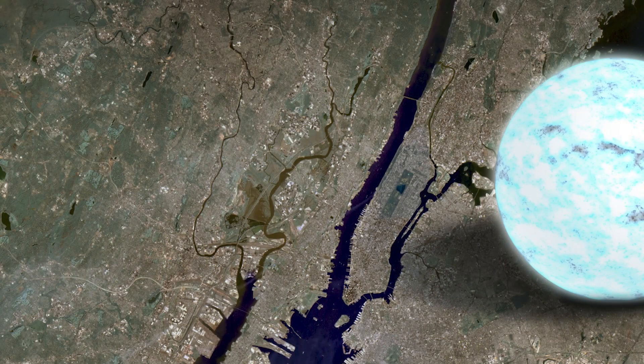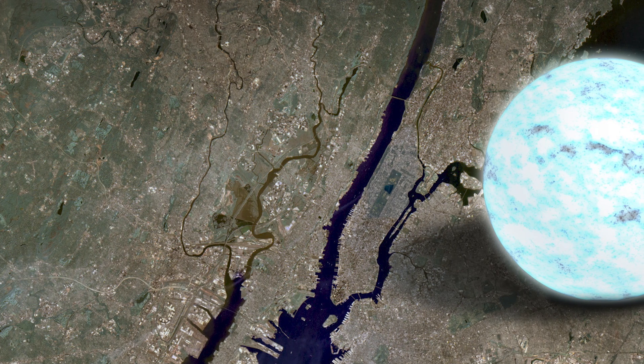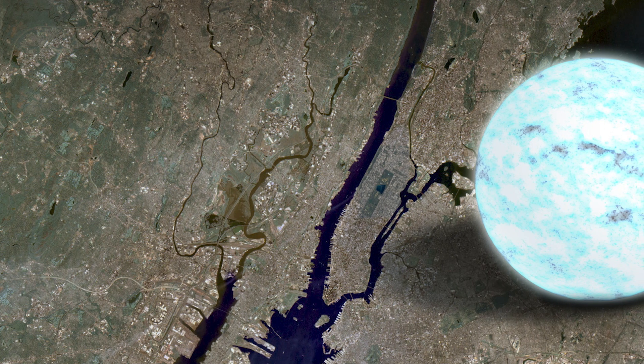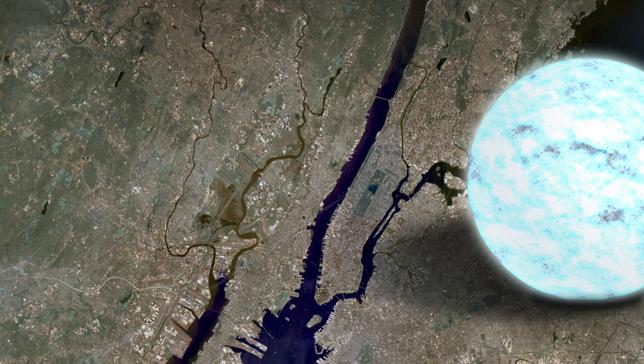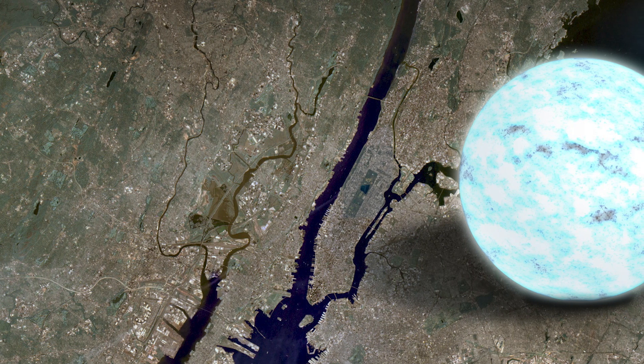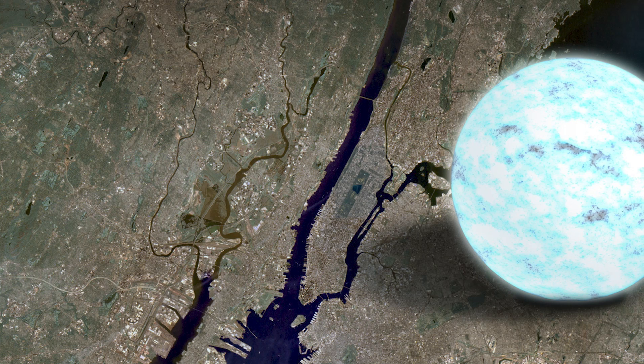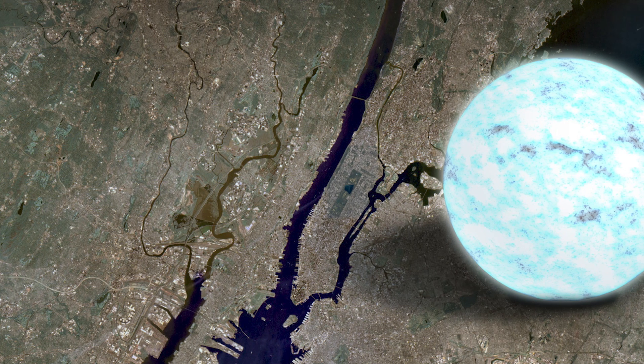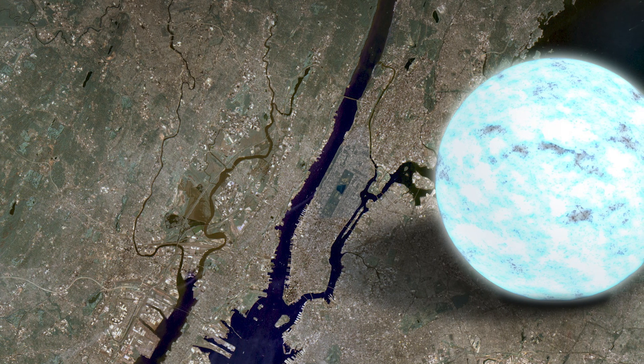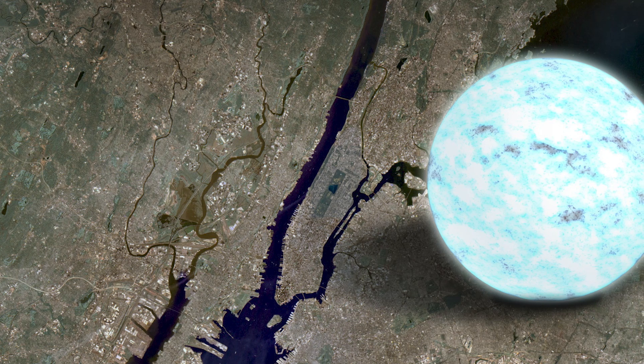To set the scene, if a magnetar appeared 120,000 miles away from our home planet, or the distance halfway between here and the moon, its magnetic field could theoretically strip all of the information from all of the magnetic strips on all of the credit cards here on Earth in a few milliseconds.